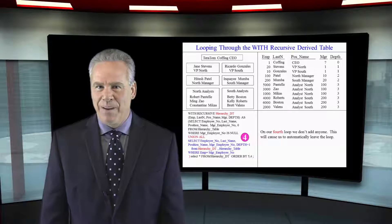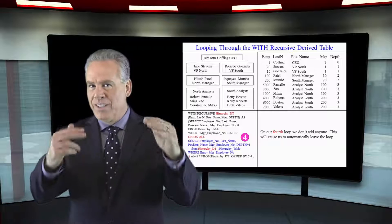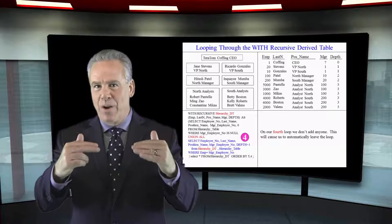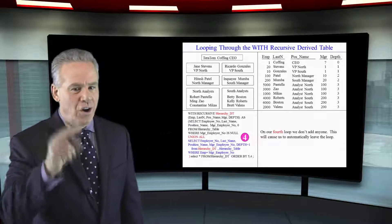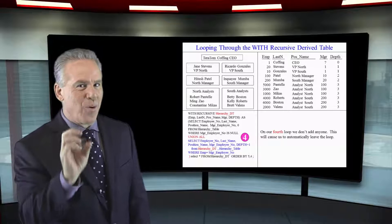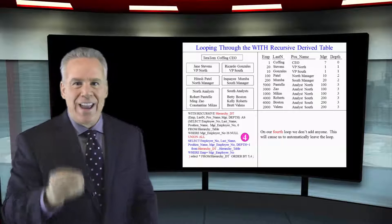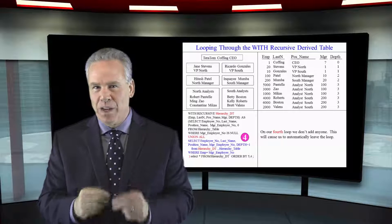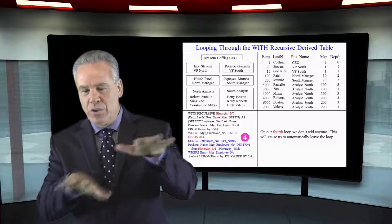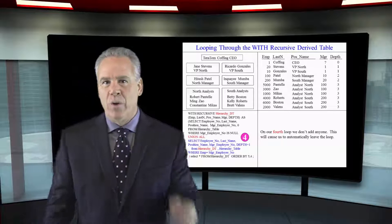Just recapping, with our with recursive we built the derived table then we seeded it with just the top row and then we did the union all and we looped about three times each time adding more to the current hierarchy and that's the way a recursive derived table does. There's a hierarchy and once you establish how that joins together it just continues to add rows to it.